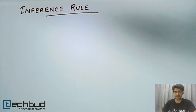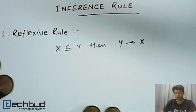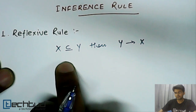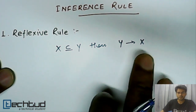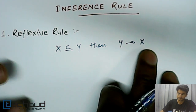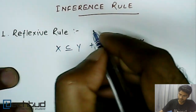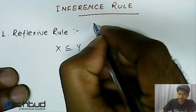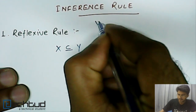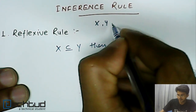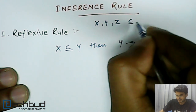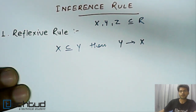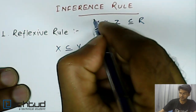The first inference rule is the reflexive rule. According to the reflexive rule, if x is a subset of y, then y can always functionally determine x. Here, let's make an assumption that x, y, z are all proper subsets of a relation r.